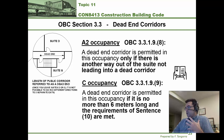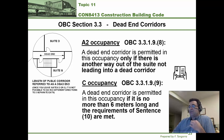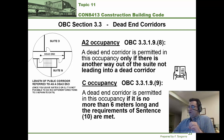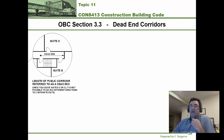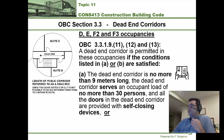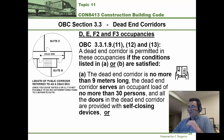For C occupancies, a dead-end corridor is allowed as long as it's no more than 6 meters long and the requirements in sentence 10 are met — so go read that. For occupancies D, E, F2, and F3, there's a lot to read.